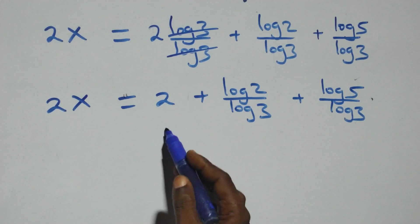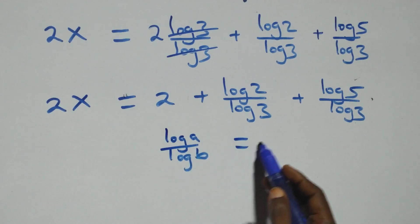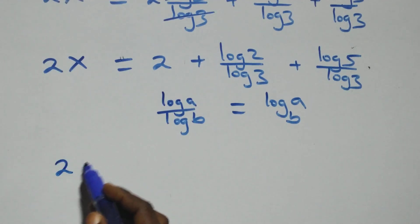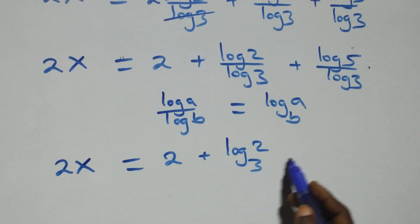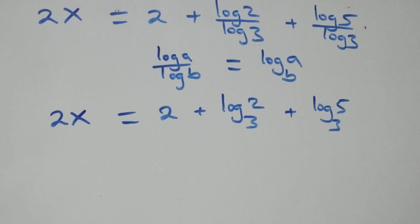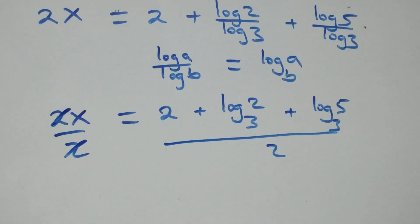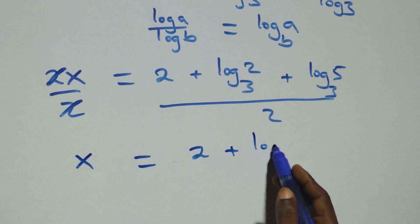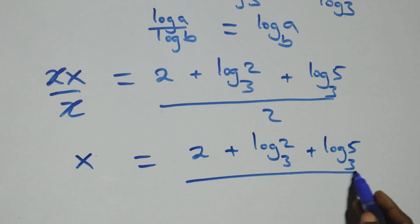We apply the change of base formula: log a over log b is the same thing as log a to base b. This becomes 2x equals 2 plus log 2 base 3 plus log 5 base 3. So x equals 2 plus log 2 base 3 plus log 5 base 3, all over 2.